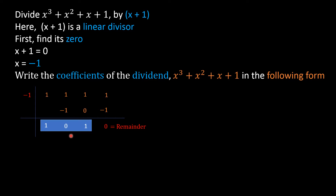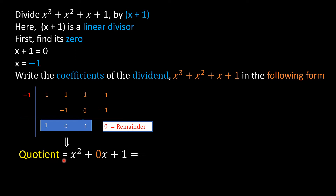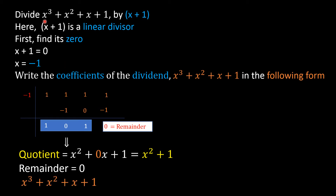The quotient will have degree 2, meaning it will be a quadratic polynomial. So the quotient is x² + 0x + 1, where coefficient of x² is 1, coefficient of x is 0, and constant term is 1 — giving quotient x² + 1. The remainder is 0. We can write the dividend as (x + 1)(x² + 1).